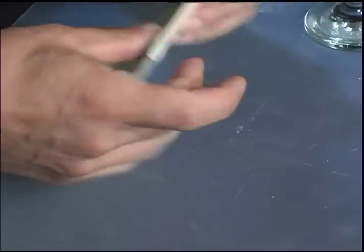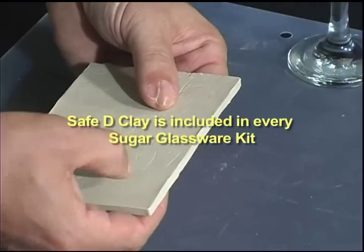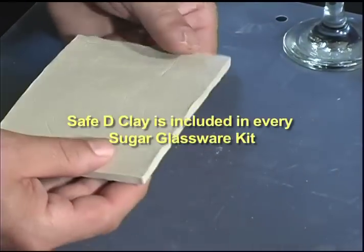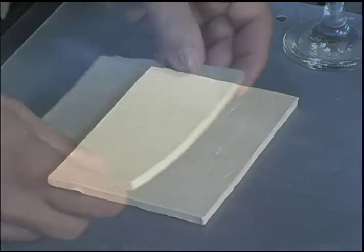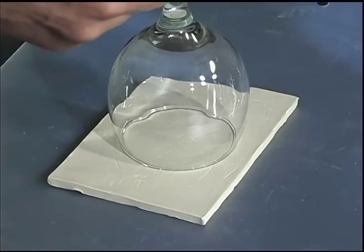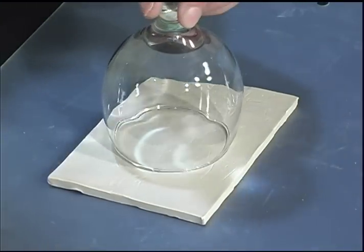To start the mold making process we are going to use safety clay which is a non-toxic, non-drying clay that we have sheeted to about one quarter of an inch thick. Take the wine glass and place the top of the glass down onto the safety clay making sure the glass is centered.